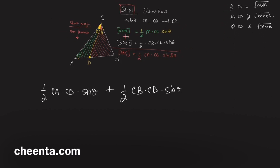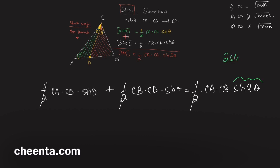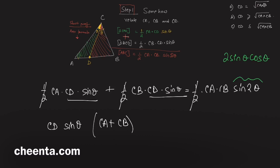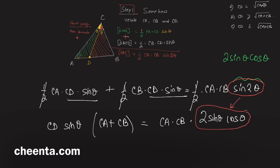We are happy because we have CA, CB, and CD in one expression. Now let's use a little trigonometry: sine 2θ = 2 sine θ cosine θ. Taking CD sine θ common from the left-hand side, we have CA + CB. On the right-hand side we have CA times CB times 2 sine θ cosine θ.